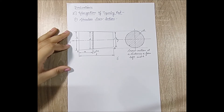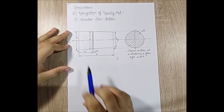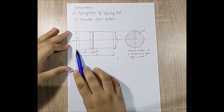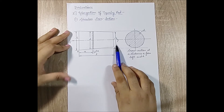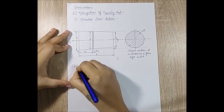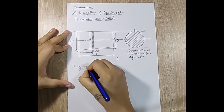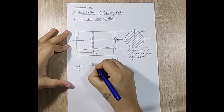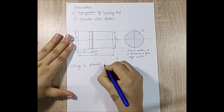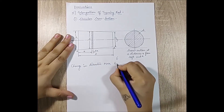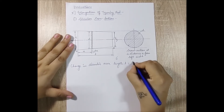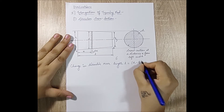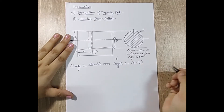We start with a term called the change in diameter. The diameter at one end is d1 and at the other end is d2. The change in diameter over the entire length L is d1 minus d2.